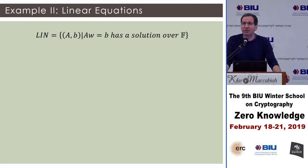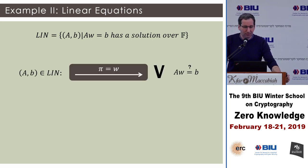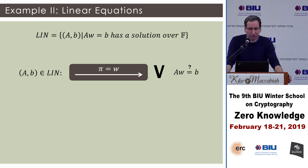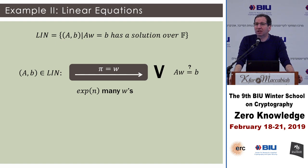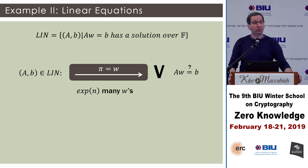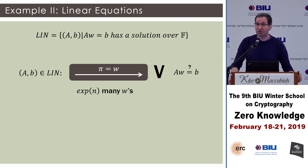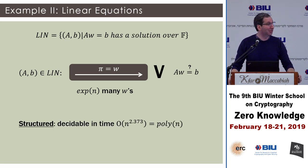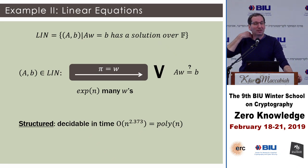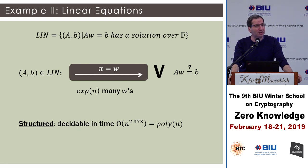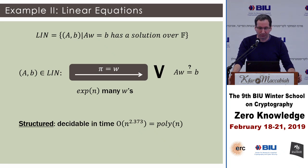Another example is LIN — solving linear equations. Given a matrix A and vector b, you want to know if there's a solution to Aw = b. To prove a solution exists, send the solution and do matrix-vector multiplication to verify. Unlike SAT, linear equations have structure — specifically, they're linear — which implies solving takes time between n² and n^2.373, where 2.373 is the matrix multiplication exponent. This is polynomial in n, so we have an NP problem that not only can be verified efficiently, but a solution can also be found quickly.